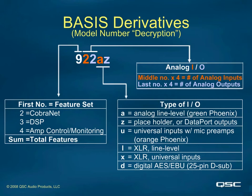By the way, the 16 channels of analog outputs are represented as eight data ports for a 904ZZ, since each data port carries two channels of analog audio to the amplifier. Take a look at this chart again — see if you can determine the features of two other models: a 520UZ and a 914LZ.